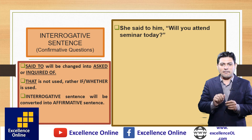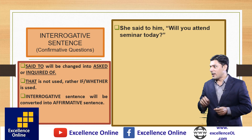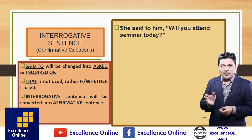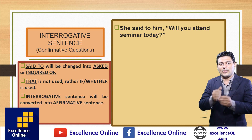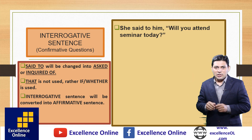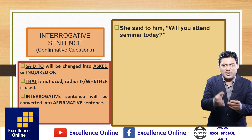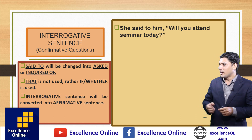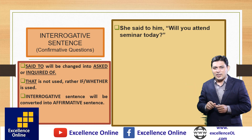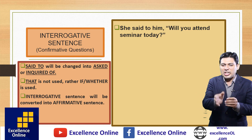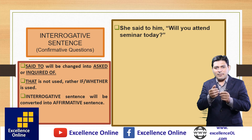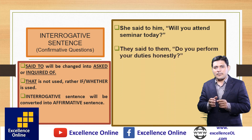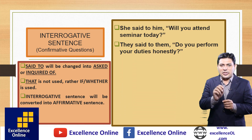For joining two clauses in a confirmative question, we use 'if' or 'whether.' The second person pronoun 'you' changes according to the object of the reporting speech. Here the object is 'him.' The interrogative sentence converts to affirmative, so the subject comes first. 'She said to him, will you attend seminar today?' becomes 'She asked him if he would attend seminar that day.' Note: 'will' changes to 'would' and 'today' changes to 'that day.'